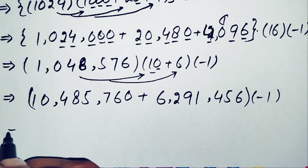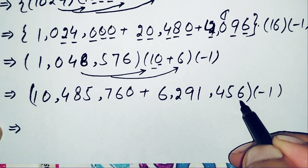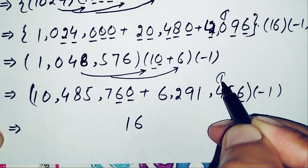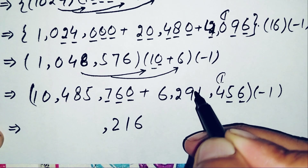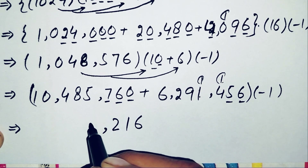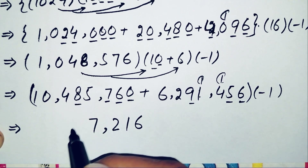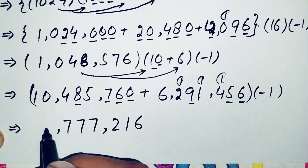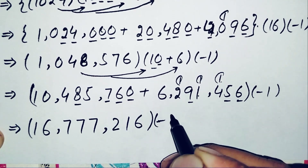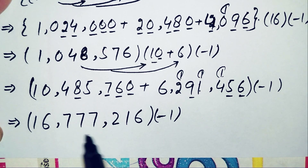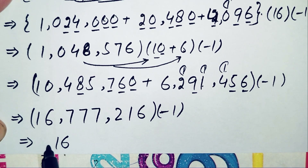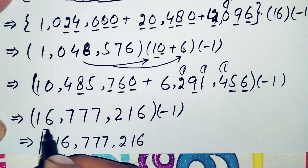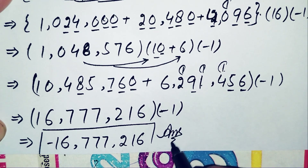Adding 10,485,760 and 6,291,456: starting from ones: 0+6=6; 6+5=11, write 1 carry 1; 7+4+1=12, write 2 carry 1; 5+1+1=7; 8+9=17, write 7 carry 1; 4+2+1=7; 0+6=6; giving 16,777,216. Multiplying by negative 1, our final answer is negative 16,777,216.